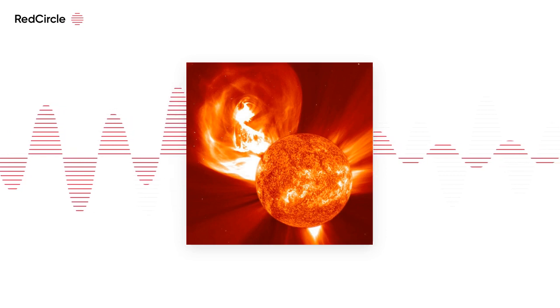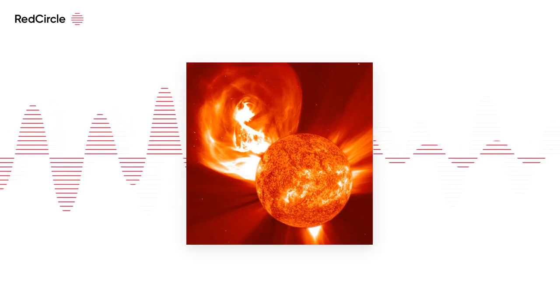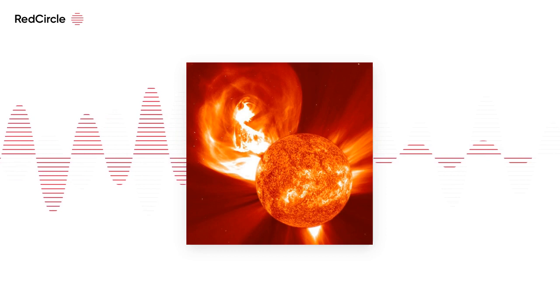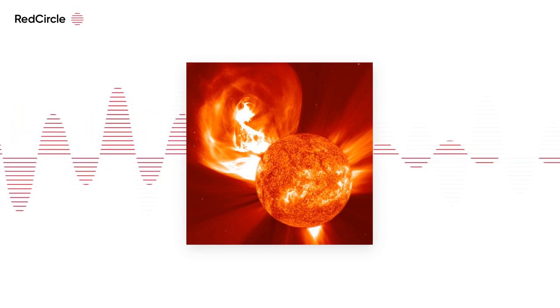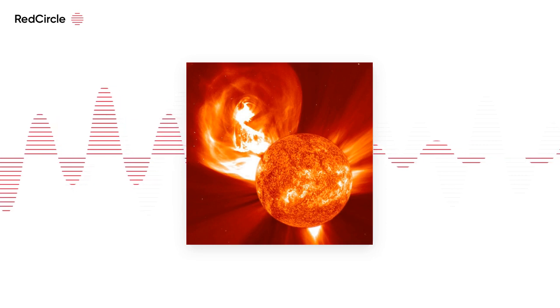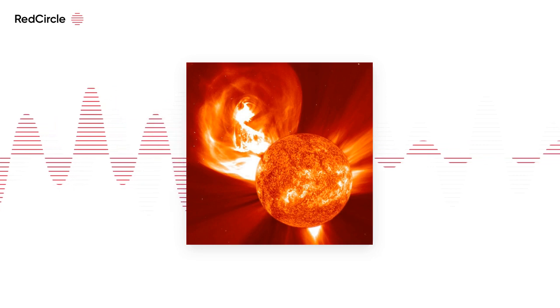A solar flare is radiation energy moving at the speed of light, and that energy can reach Earth in about 8 minutes. If you go back to that idea of the cosmic shotgun, the CME is the plasma BBs or buckshot, and the flare is the muzzle blast.